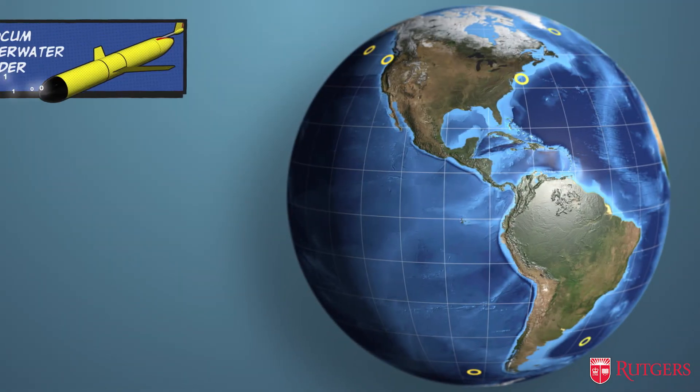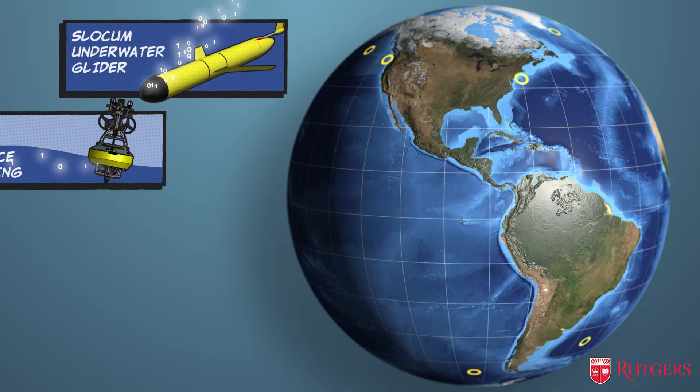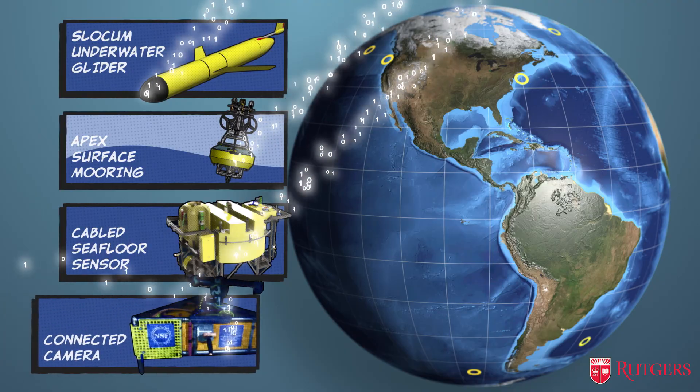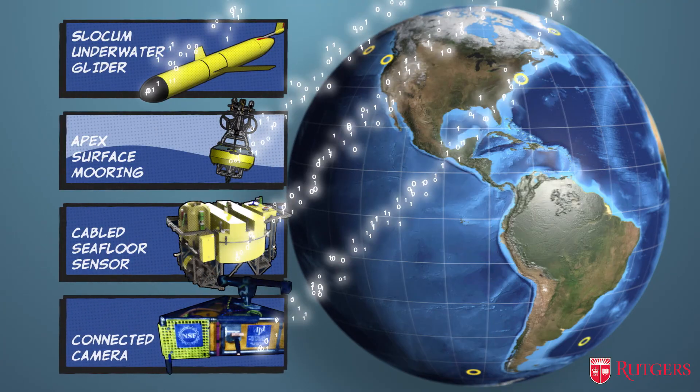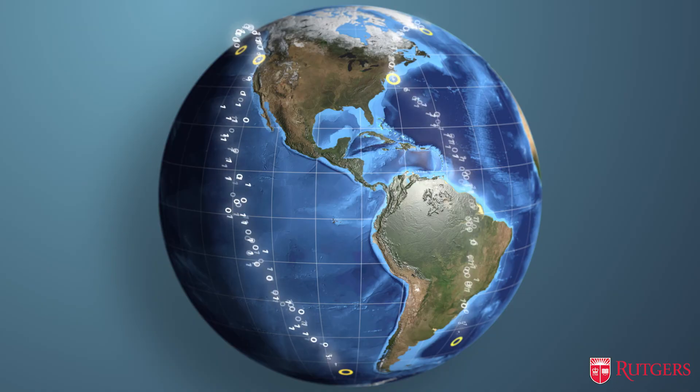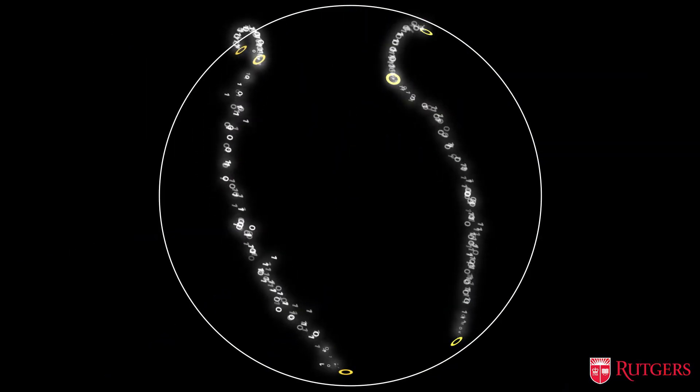For example, autonomous underwater robots, solar-powered buoy sensor systems, cabled seafloor sensor systems, and cameras that are connected to the mainland with power and data. So now there's a constant stream of information coming from key parts of the ocean,